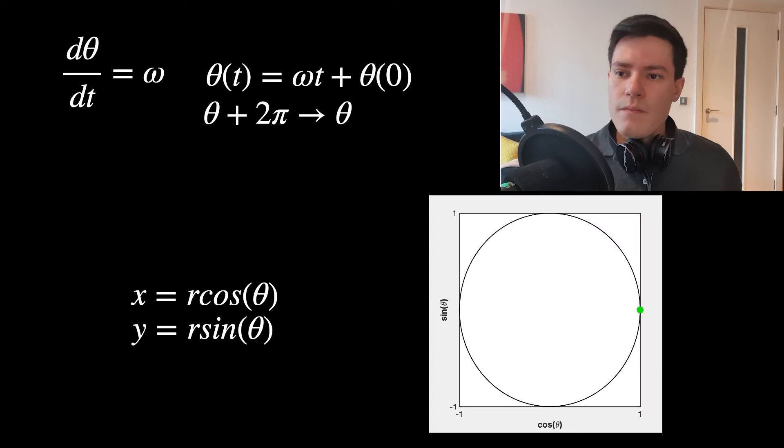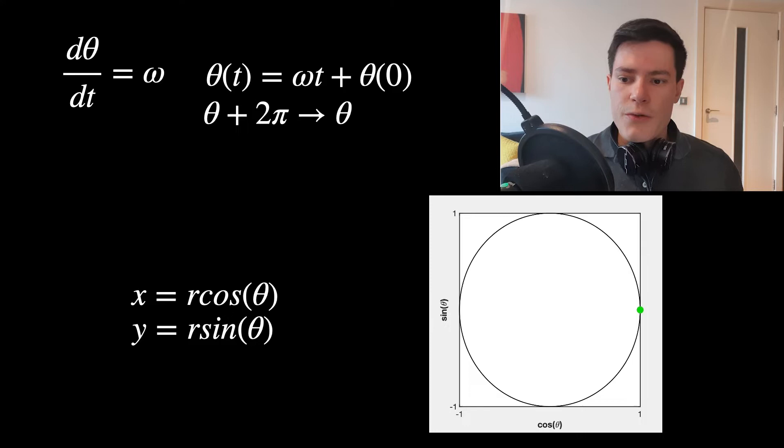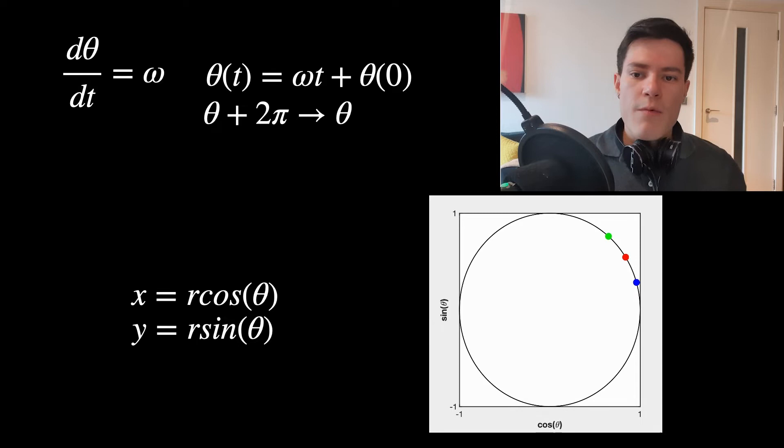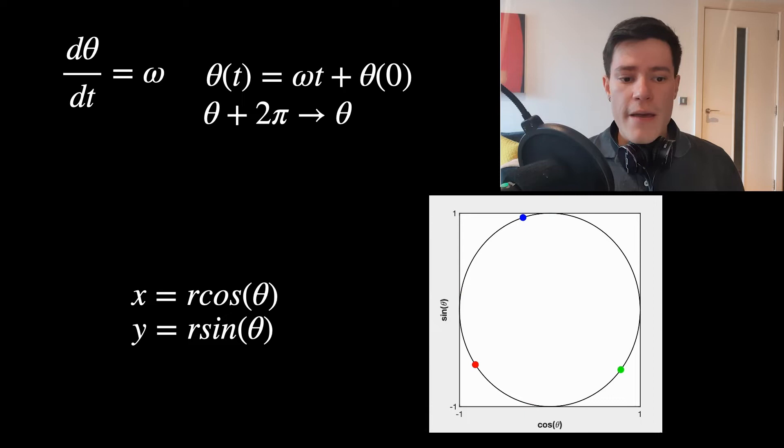One of the easiest ways to look at this system is to think about it as being directly on a circle. The way to do that is just to take some radius, usually chosen to be one, and plot cosine theta on the x-axis and sine theta on the y-axis. What we end up with is something where the oscillators are now moving in time and we can see them moving around the circle.